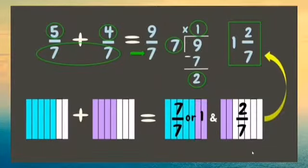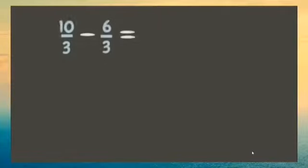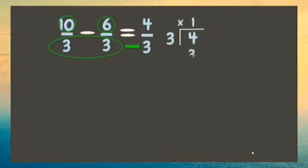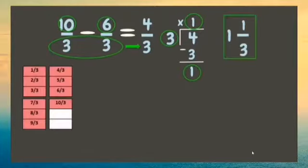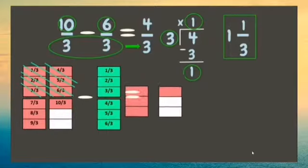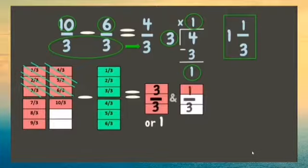Now, let's have another example: ten-thirds minus six-thirds. Ten minus 6 is 4. Copy the denominator, 3. Since our answer is also an improper fraction, let us divide 4 by 3. Our final answer is 1 and 1/3. Let me show you our representation. Great job!